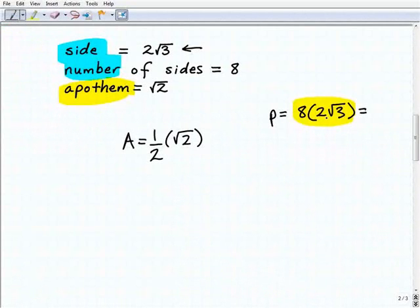Now, if you're rusty on it, you want to go back and review. But this is simply 16 times radical 3. So it's going to be 8 times 2, then you have your radical 3. So 16 times the square root of 3, or radical 3, is your entire perimeter. So now let's write that here.